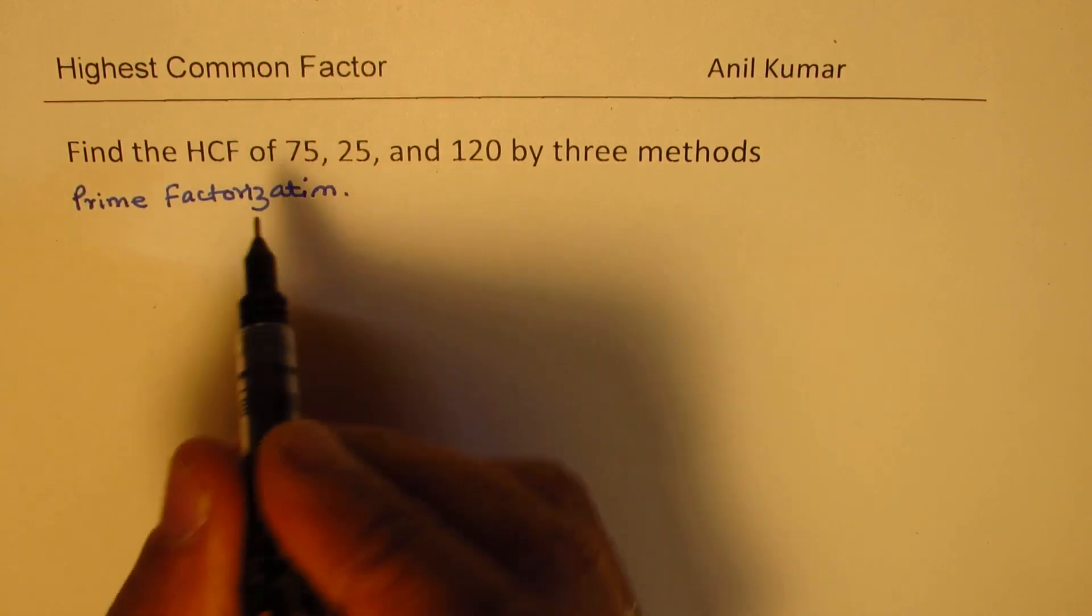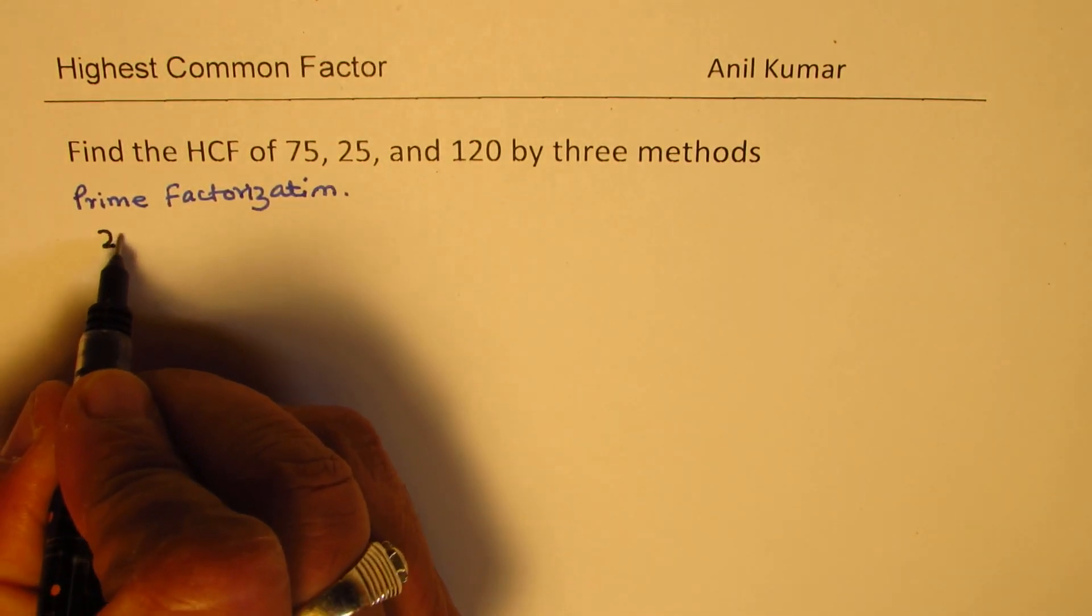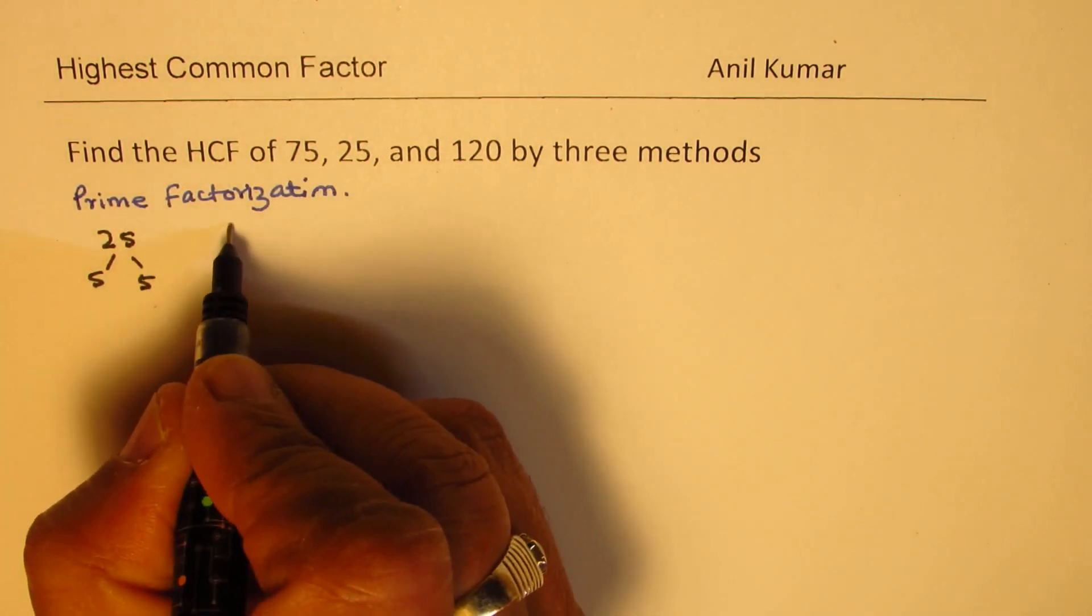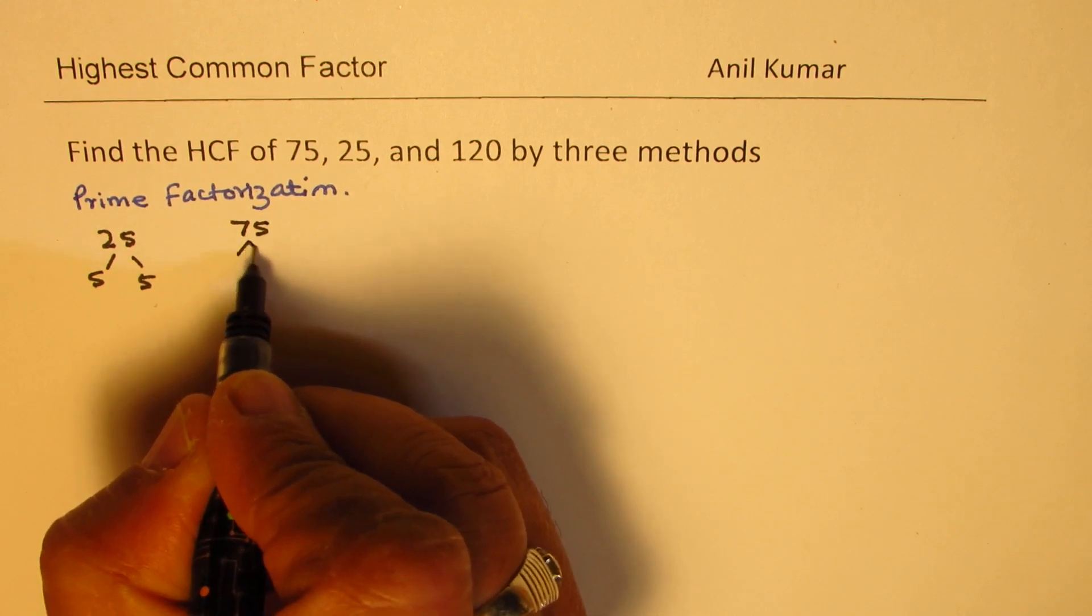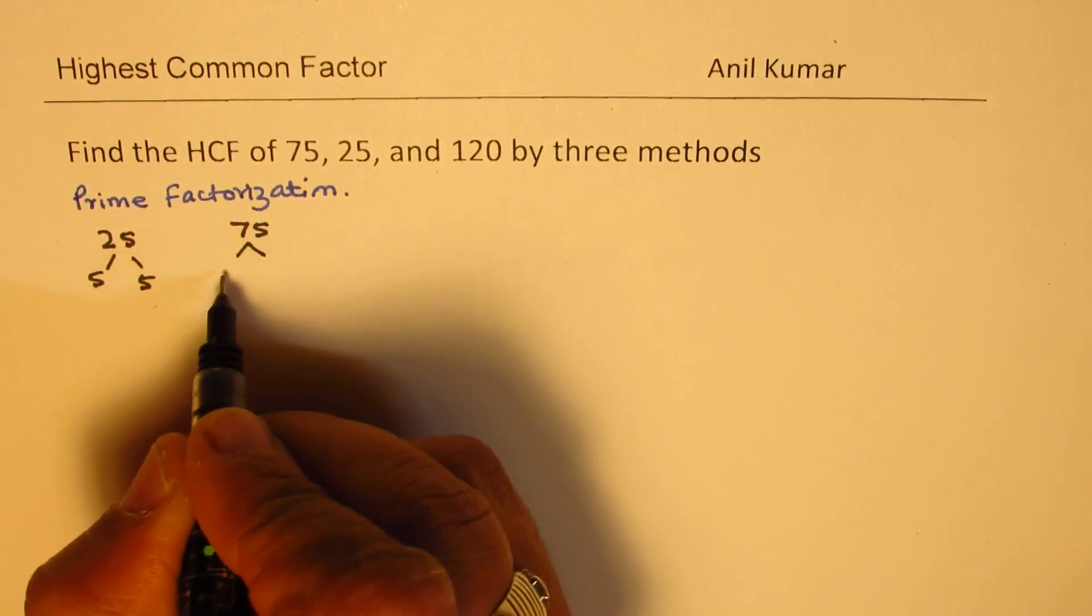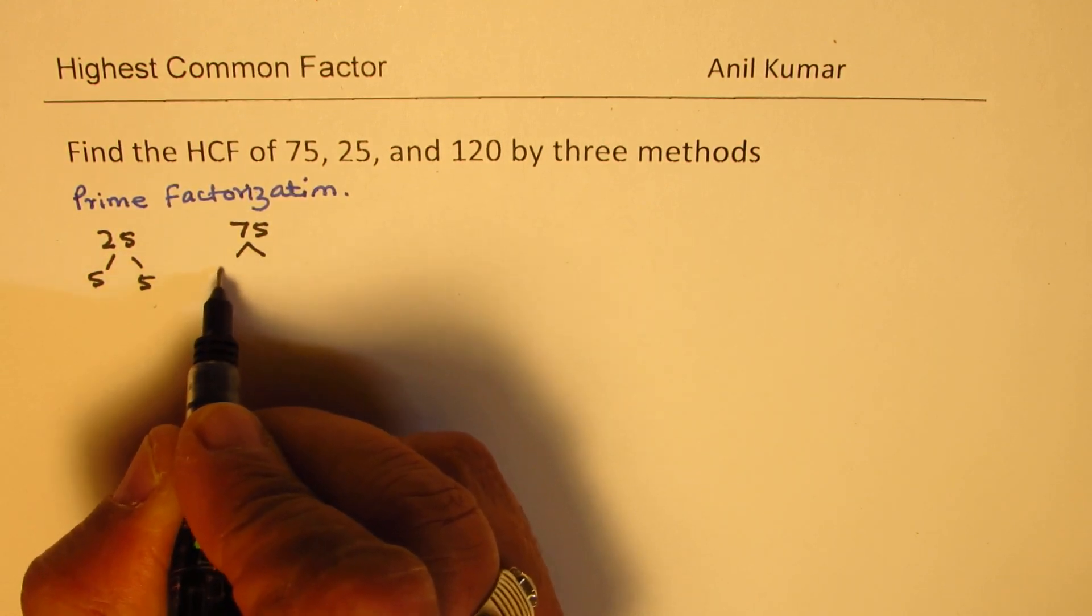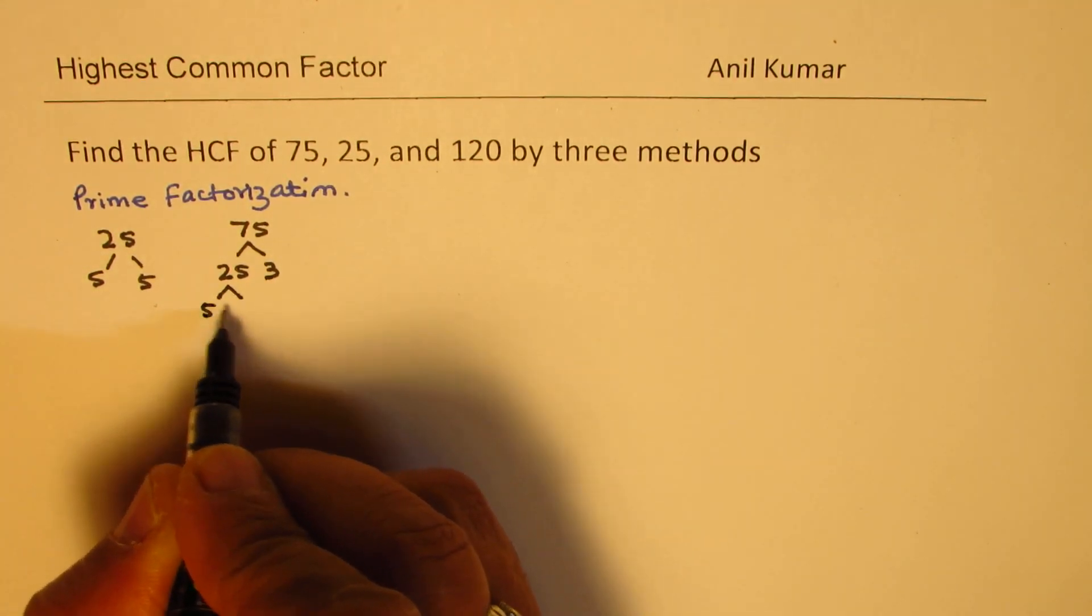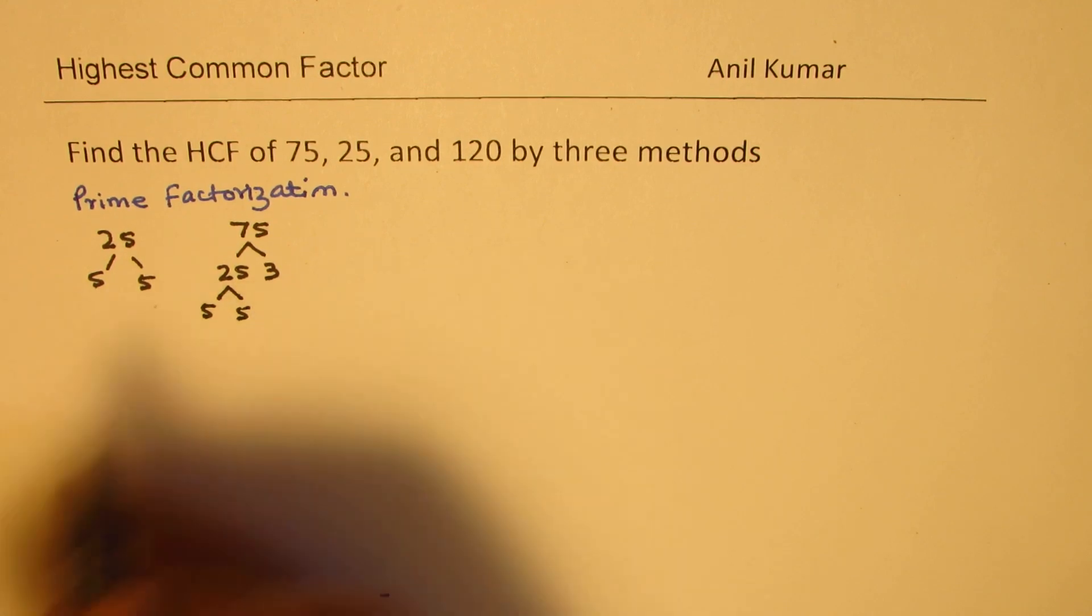Prime factors for 25 are 5 and 5. For 75, you can divide this by 25 times 3 and then 5 can be written as 5 times 5. So, 5 times 5 times 3.